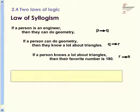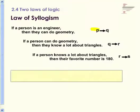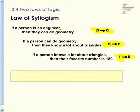Another law of logic is the law of syllogism. This is a series of if P, then Q; if Q, then R; if R, then S — and we can make conclusions about those things as long as we line them up properly.